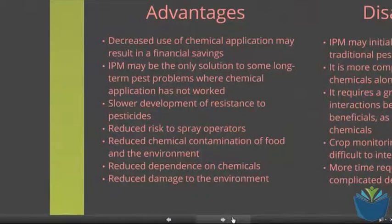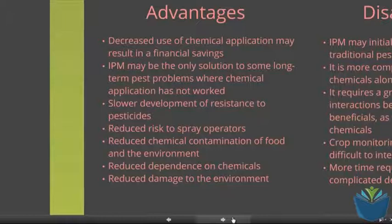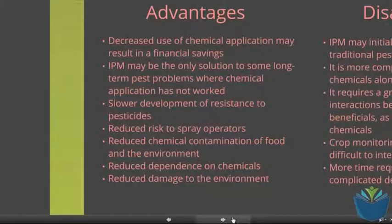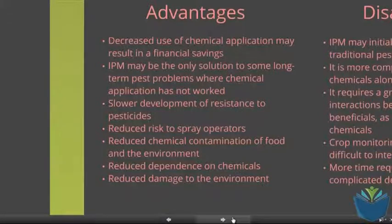Some of the major advantages of IPM: it means you don't have to use as many chemicals, saving money. It may give a solution to a problem that chemical control hasn't been able to eradicate. You don't get such a quick build-up of resistant strains of organisms to pesticides. There's a reduced risk for people working in these areas since the chemicals are less prevalent. You don't get as much build-up of chemicals within your food, so they don't bioaccumulate. Farmers can take on new solutions, are not fully dependent upon chemicals, and it reduces damage to the environment.